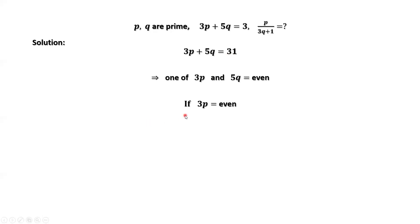If 3 times P equals even, this implies P equals 2. Why? From the given condition, P is a prime number. Here, P must be even. We only have one even prime number, which is 2.